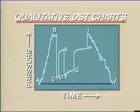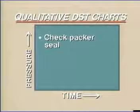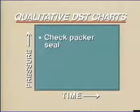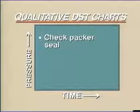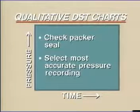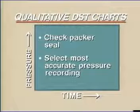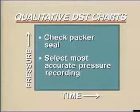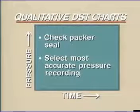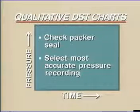To do this, we must check to see that a packer seal was maintained throughout the test. This may be verified by comparing measured pressures at two different recorders in the test string. We must also select the most representative pressure recorder from among those available for our analysis. If the pressure data or the packer seal is suspect, we should repeat the test. Otherwise, we begin our quantitative analysis.